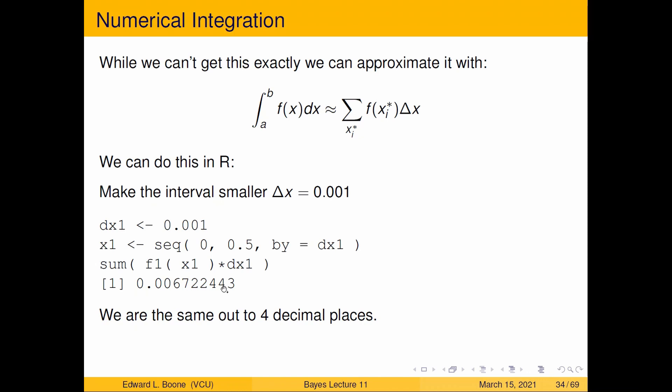You're going to have to choose whatever your tolerance is that's good enough. Four decimal places, ten decimal places, whatever. The more accurate you want to get the narrower your interval will probably need to be. But anyway this gives us the ability to calculate this.